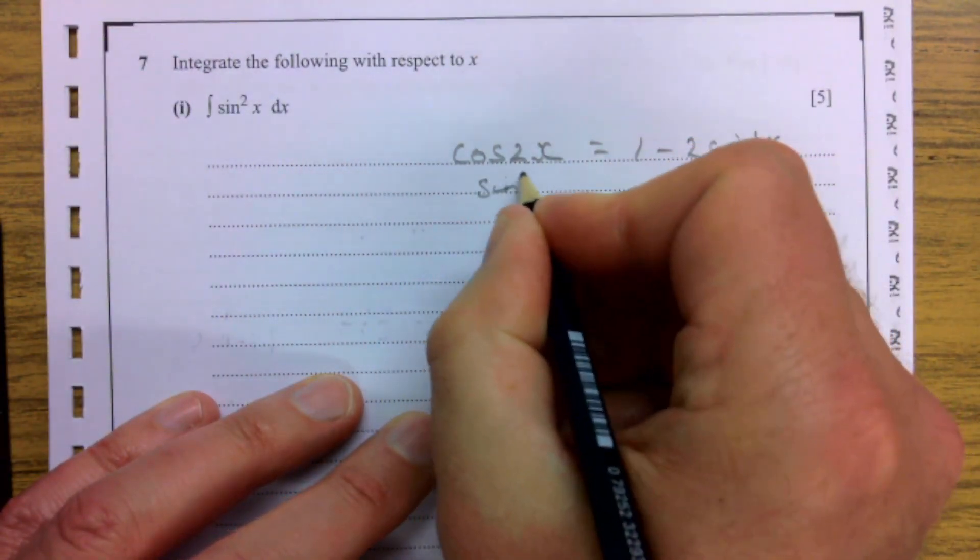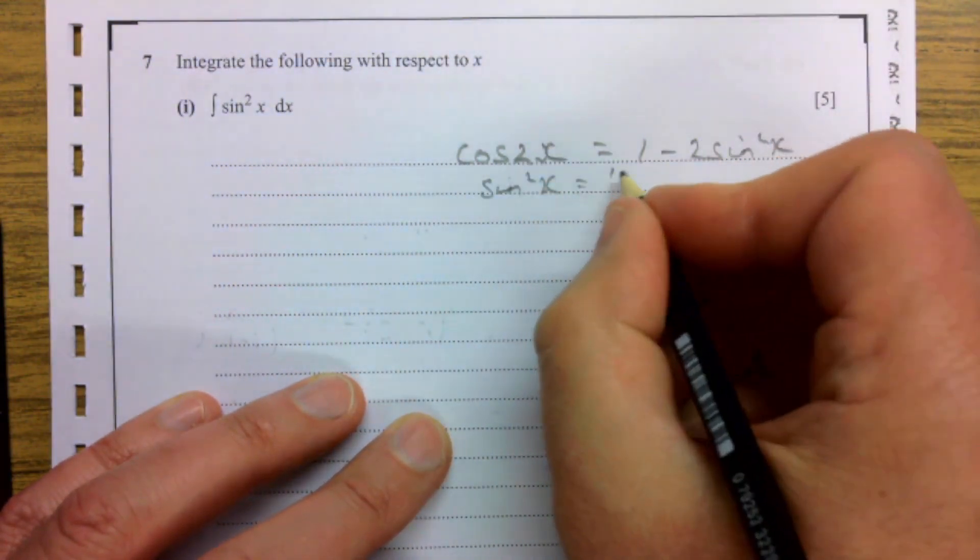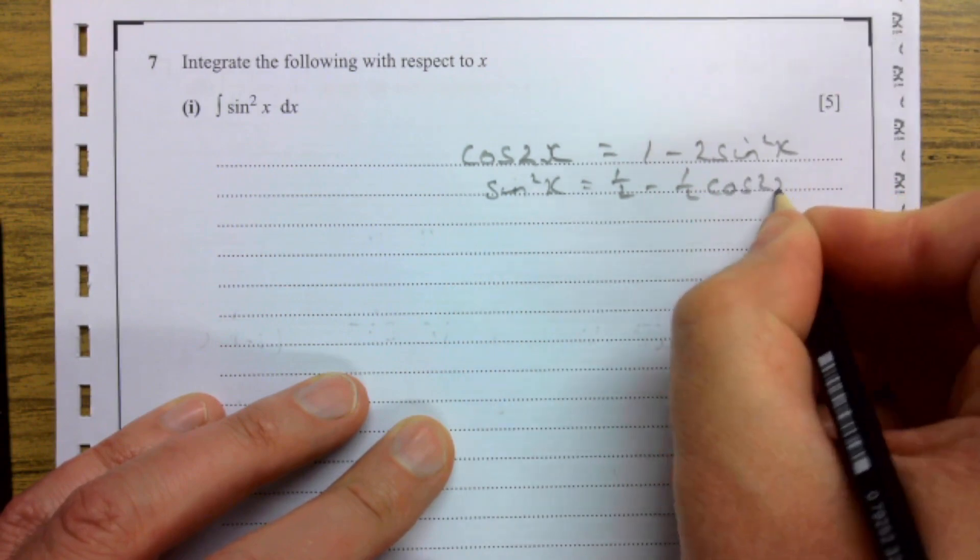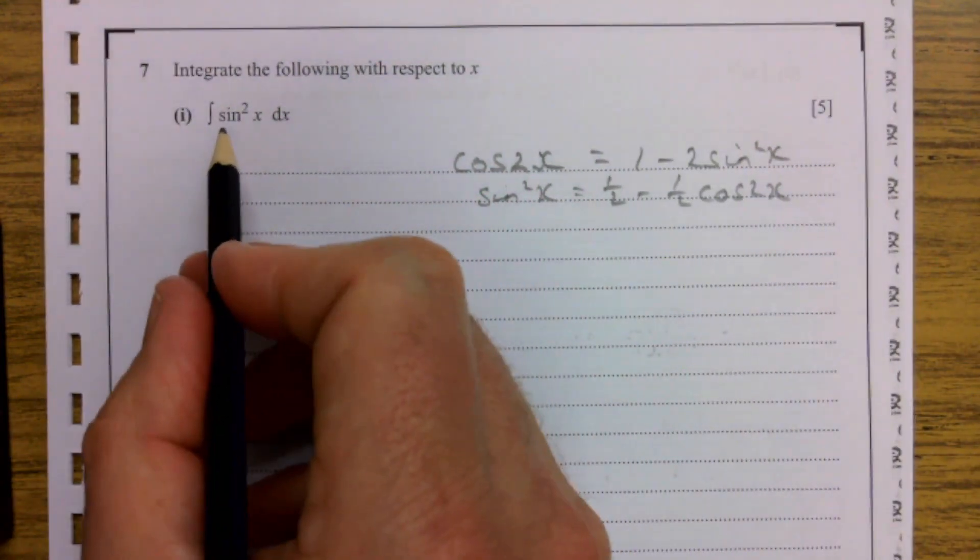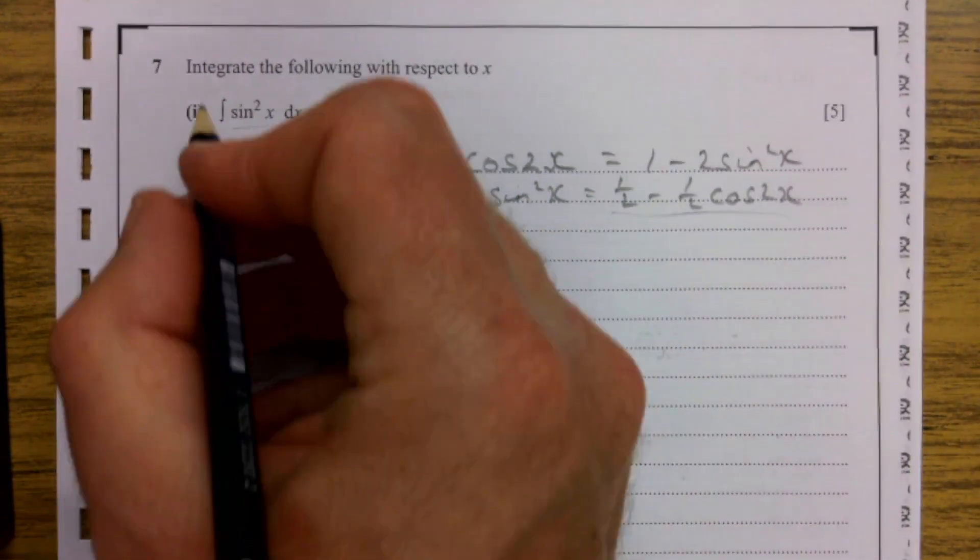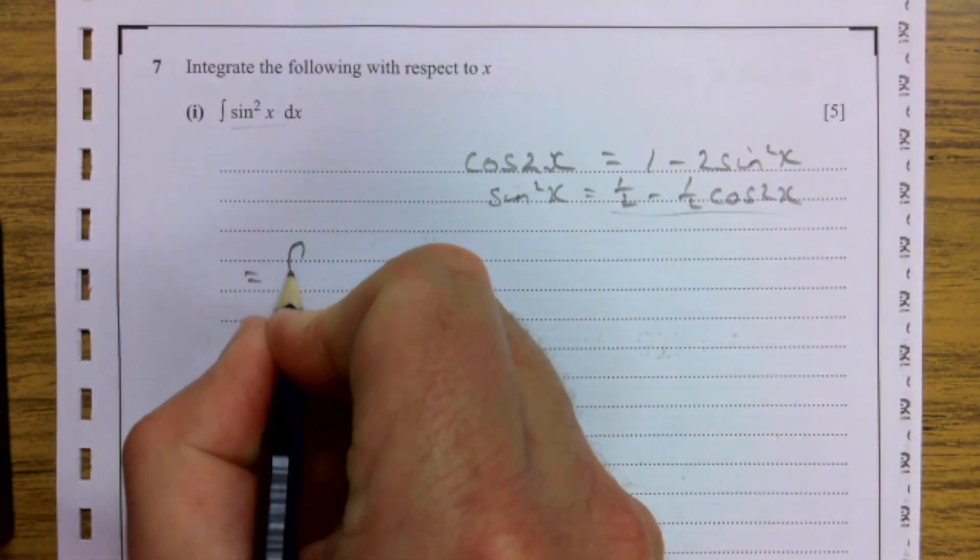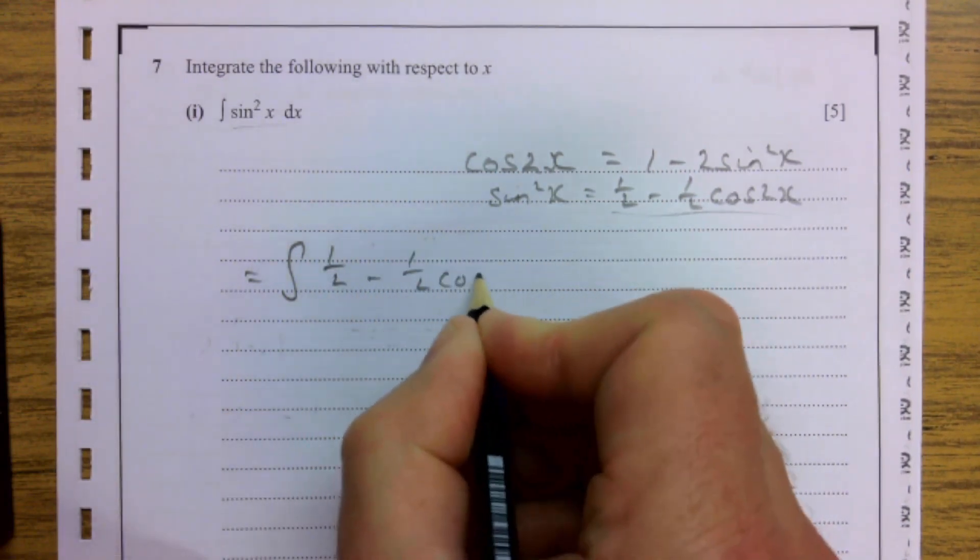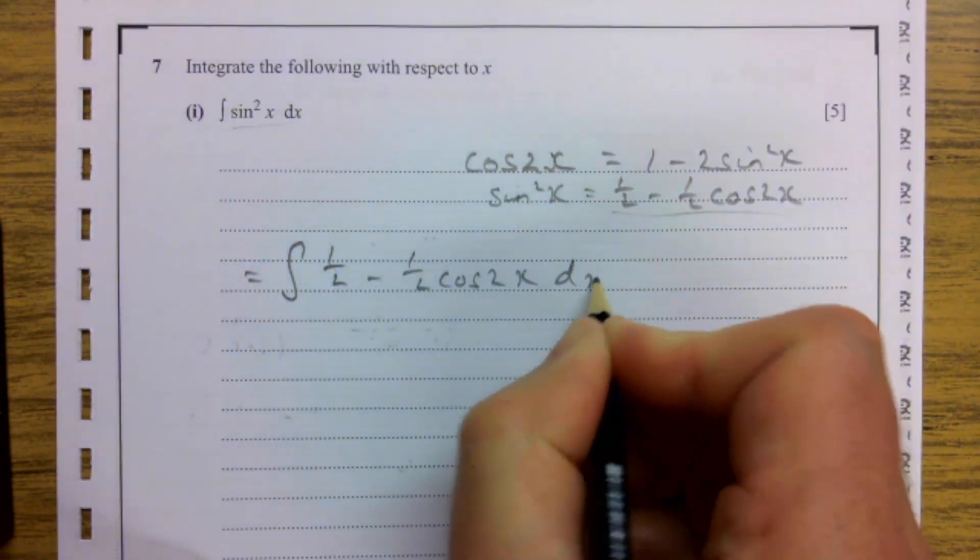Rearranging that to get sine squared x on its own, take this over to here, it gives you a half minus a half cos 2x. And the deal is that's really complicated to integrate, but this isn't so bad to integrate even though it looks messier.